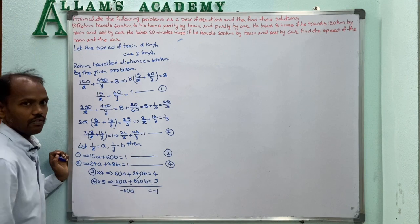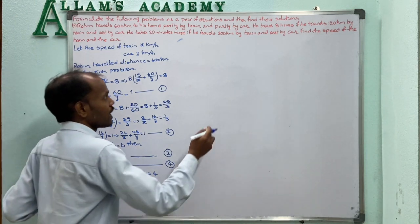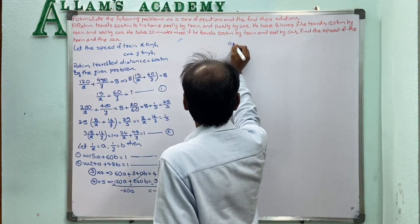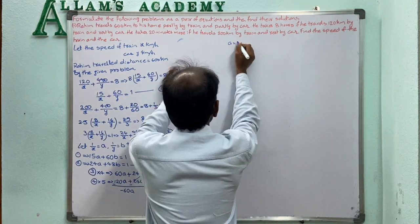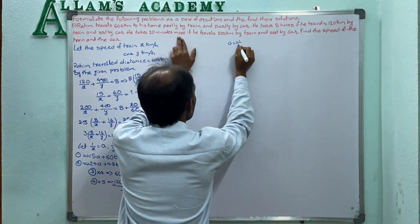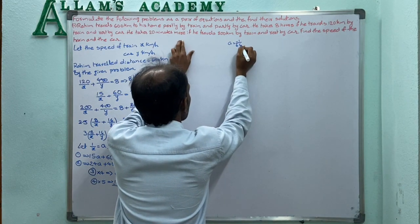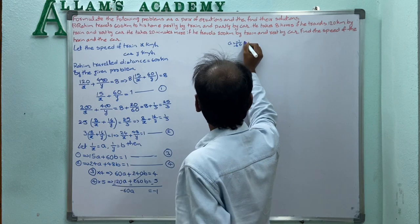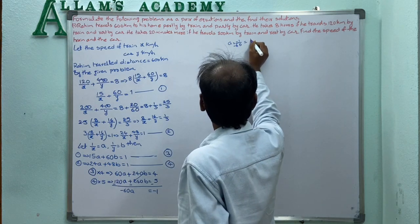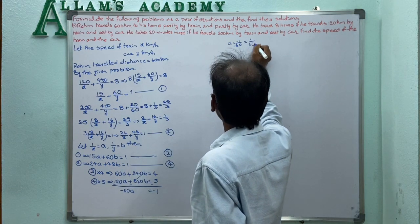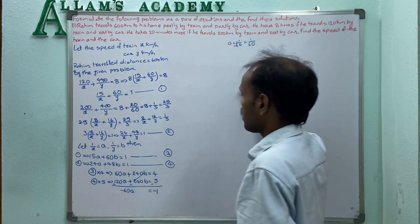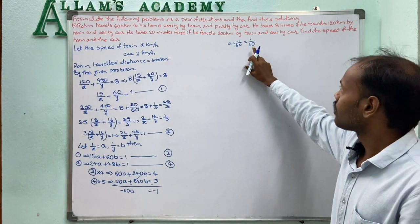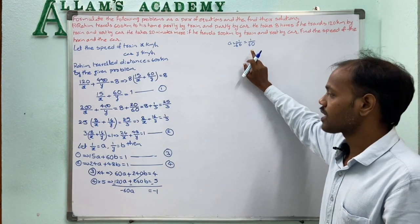From minus 60A equals minus 1, the negatives cancel, giving A equals 1/60.